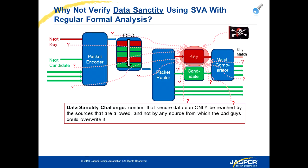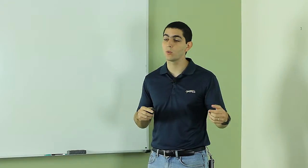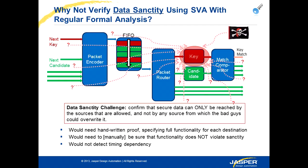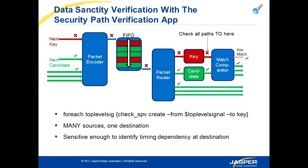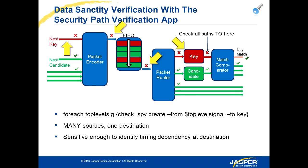Now we're going to run the analogous check for leakage, which is the sanctity verification check. We check if non-secure locations can ever affect a secure location — specifically, which of the top-level signals can affect the value on the key. Again, this could be done with standard formal, but that would require one separate assertion for each path, which is error prone and cannot detect timing violations, so it's not feasible. Using Jasper's Security Path Verification App, once we run the formal analysis, the results show that wherever we get a check mark, those signals can never affect the key. Wherever we see an X, those are places that can eventually affect the key. We see only the expected results: only the key input and the path through the FIFO can affect the key, which is exactly what we expect.